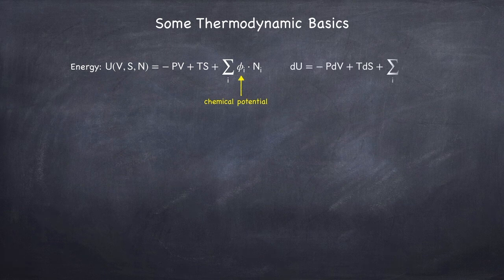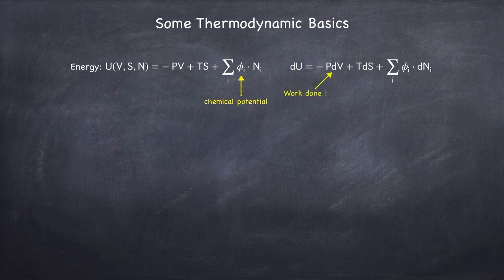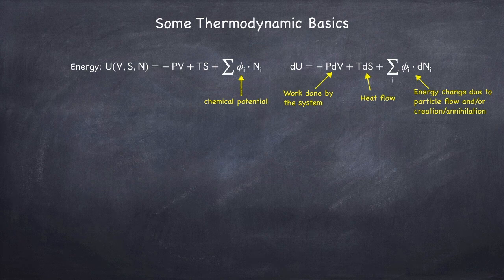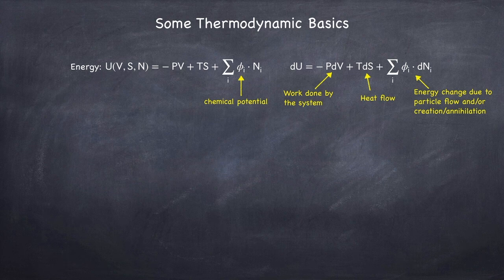The first law of thermodynamics tells us that the change in energy of a system is -P dV + T dS + phi dN, and again you've got to sum over all particle species. The first term is the work done by the system, the second term represents the heat flow either in or out of the system, and this last term represents the energy change due to particle flow and/or creation and annihilation of particles. For example, in the case of stars, this would account for the energy released by nuclear fusion — you start with hydrogen, fuse it into helium, reduce the number of hydrogen nuclei and increase helium nuclei, and in the process release energy.